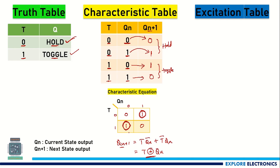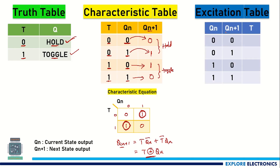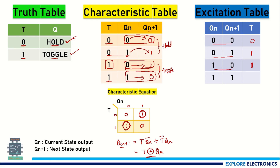Now let us write the excitation table for T flip-flop. The table contains Qn and Qn+1. For Qn equal to 0 and Qn+1 equal to 0 — looking at the characteristic table, T needs to be 0. For Qn equal to 0 and Qn+1 equal to 1, T should be 1. For Qn equal to 1 and Qn+1 equal to 0, T should be 1, because toggling from 1 gives 0. For Qn equal to 1 and Qn+1 equal to 1, T should be 0. This is the excitation table for T flip-flop.